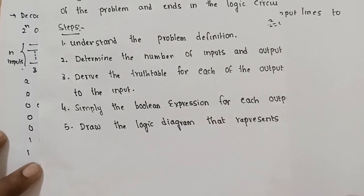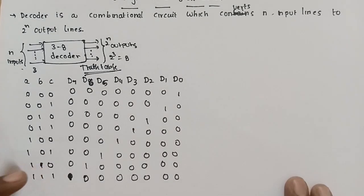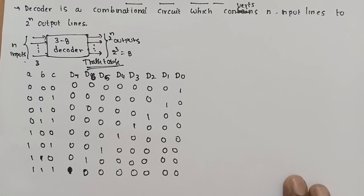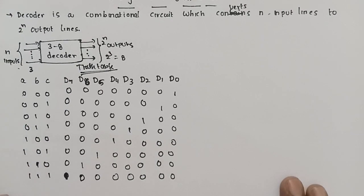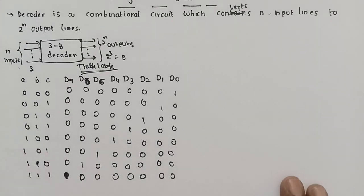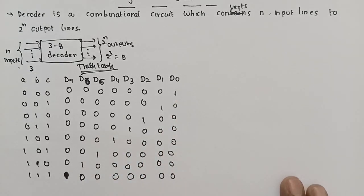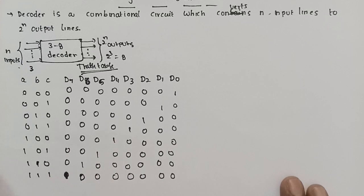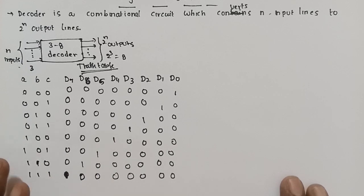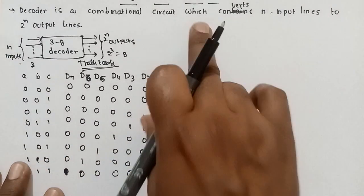Simplify the Boolean expression for each of the outputs by using KMAP. KMAP is used to find the simplified Boolean expression. KMAP is used to find the minterms. The minterms are used to find the KMAP squares and the simplified Boolean expression. In every output we have a single 1, so KMAP gives us the direct output. There are 3 variables in KMAP, so there are 8 squares in the KMAP.